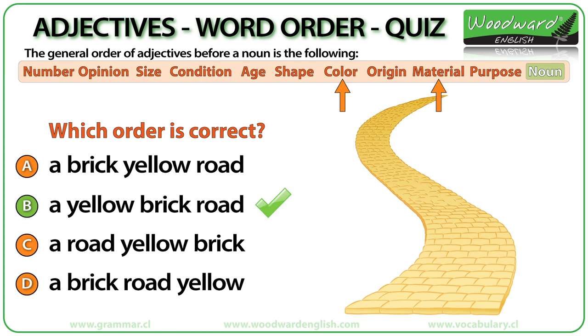A yellow brick road. Yellow is a color, brick is the material the road is made of. Color comes before material.